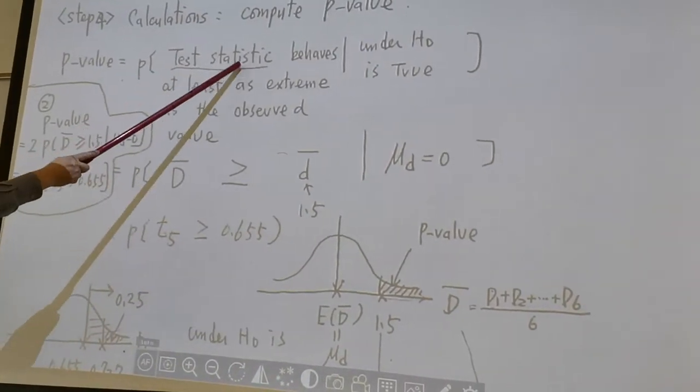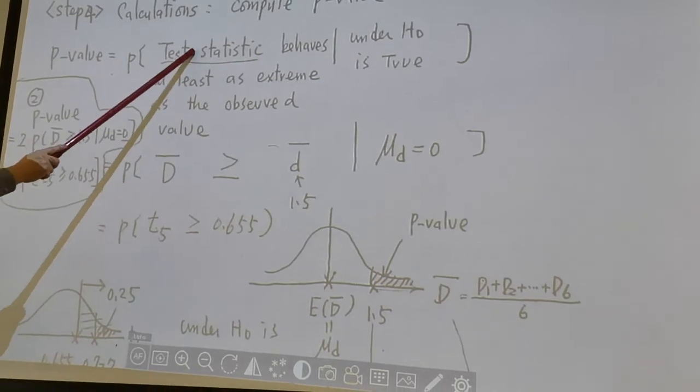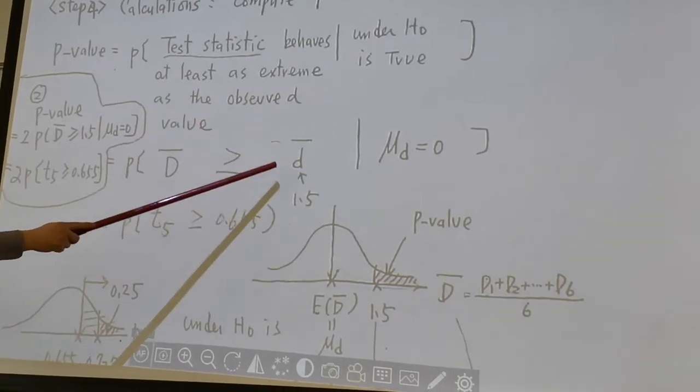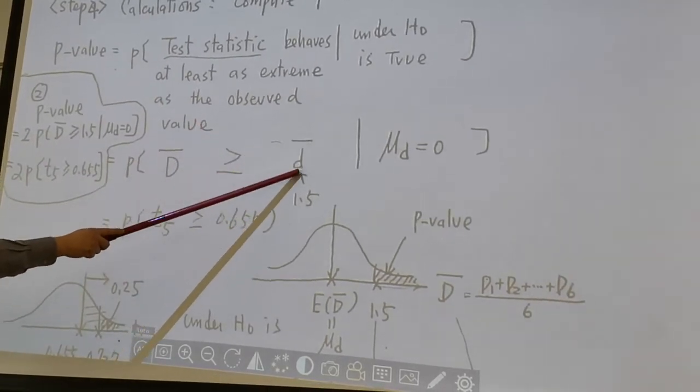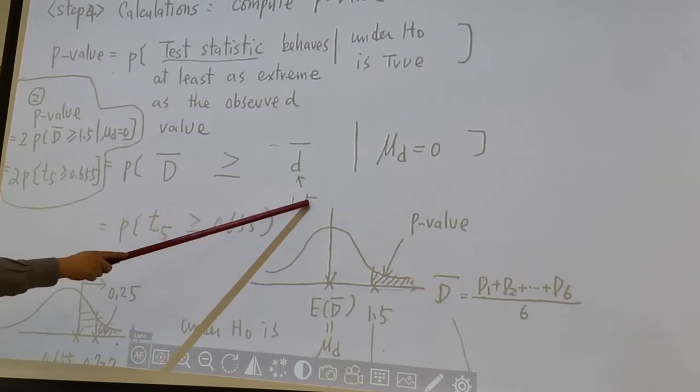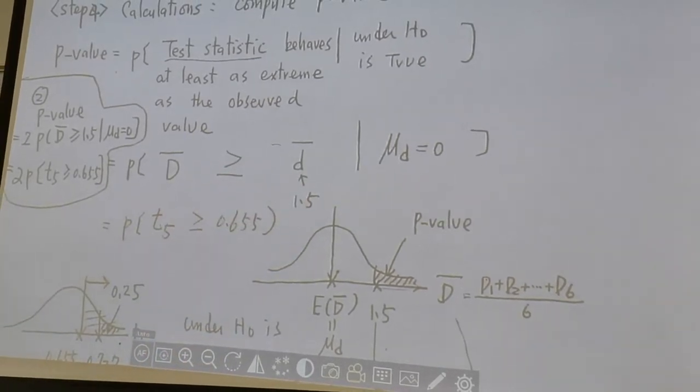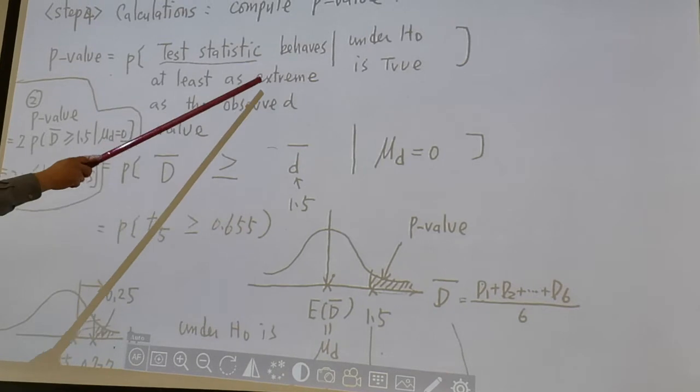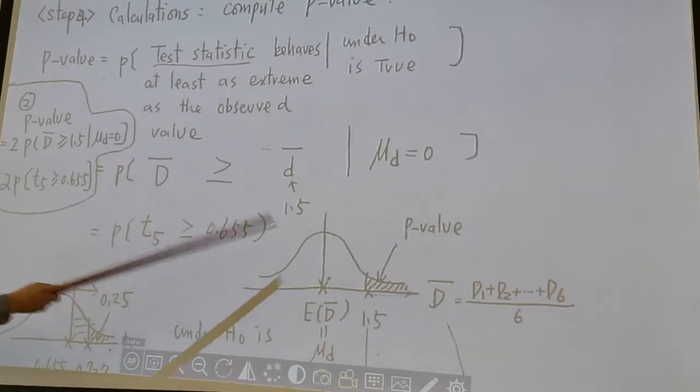And the test statistic is d-bar, and the observed value of the test statistic d-bar lowercase, that means an observed value is 1.5. So how are we going to find the meaning of extreme? Let's go over to this picture.